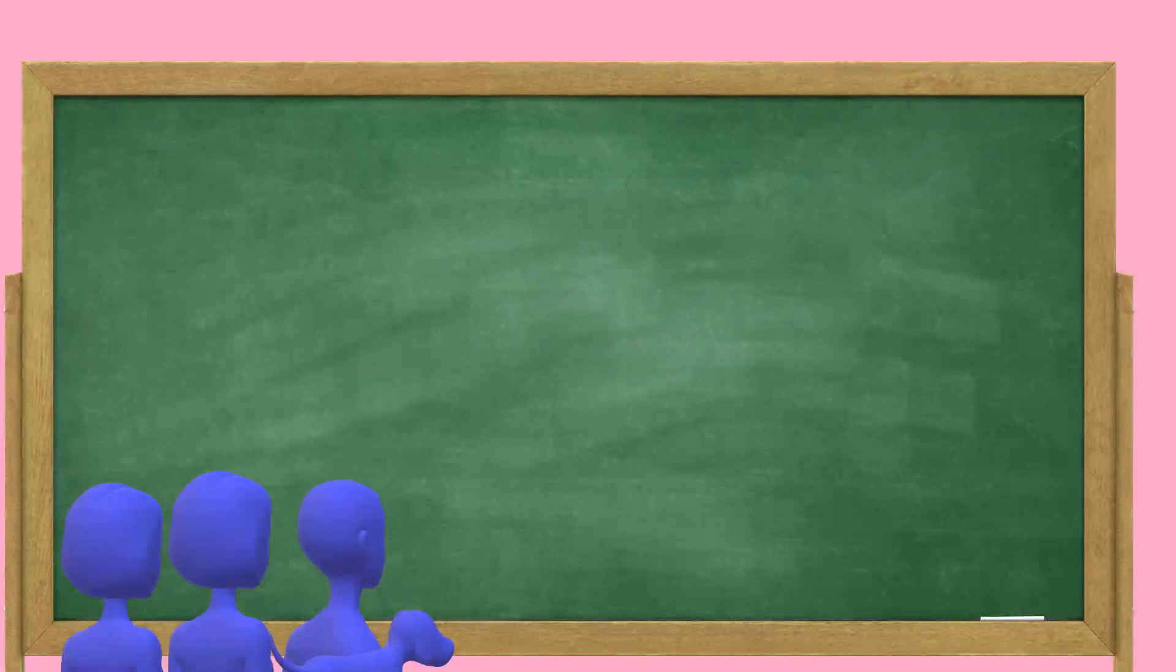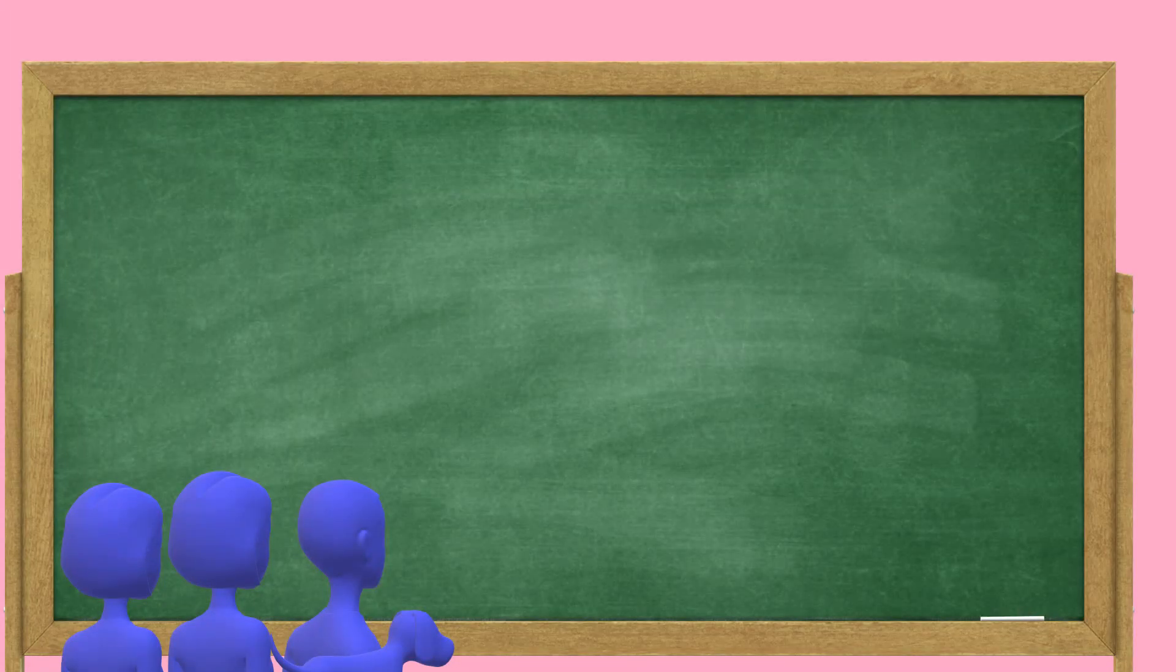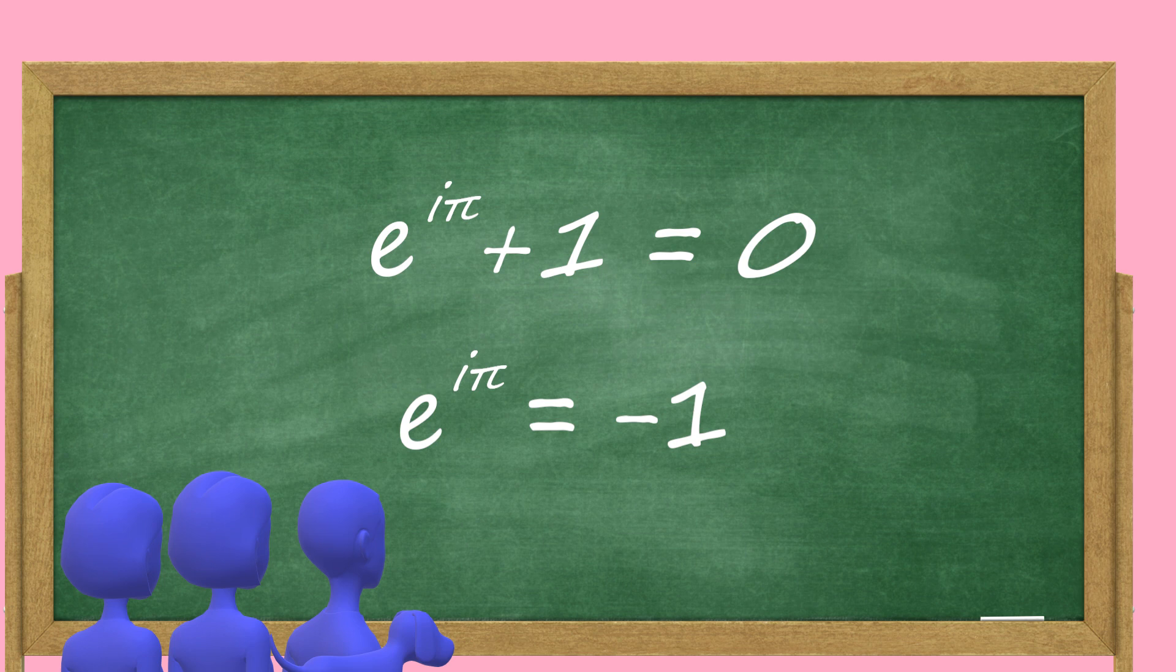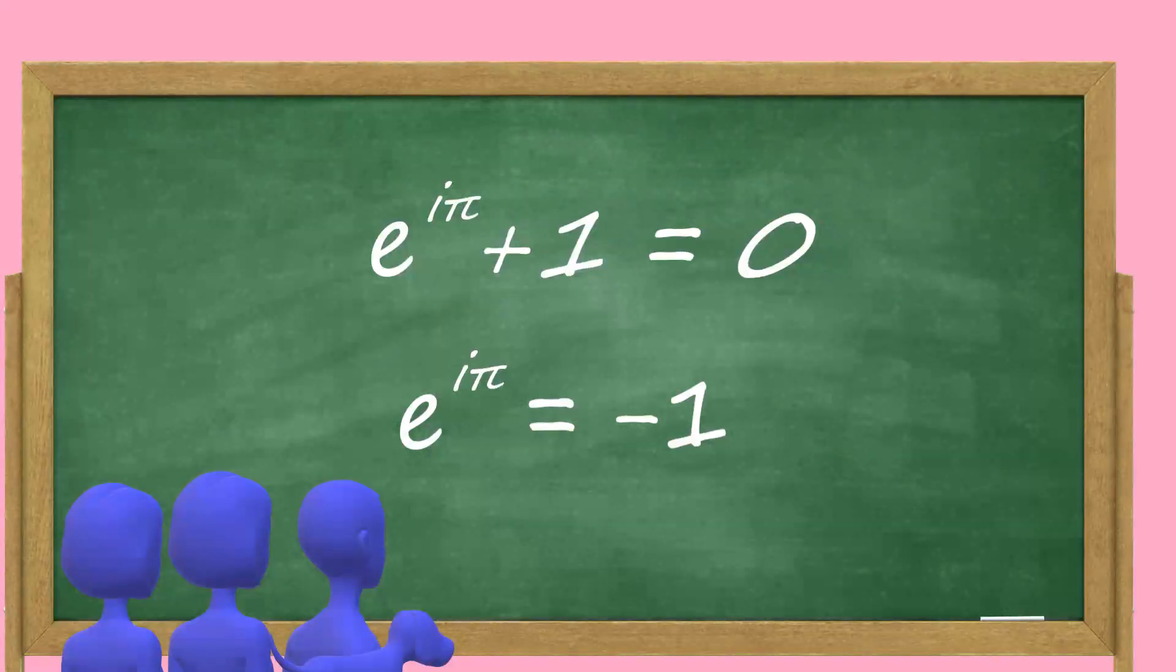A very interesting complex number fact is known as Euler's identity, which says that e to the i pi plus one is equal to zero, or e to the i pi equals negative one.